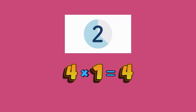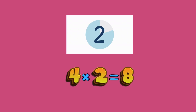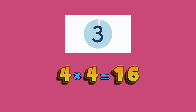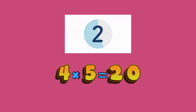4 times 1 equals what, friends? 4 — good job! 4 times 2 equals what? 8. 4 times 3 equals what, friends? 12 — good! 4 times 4 is what? 16 — good job! 4 times 5 is what, friends? 20.